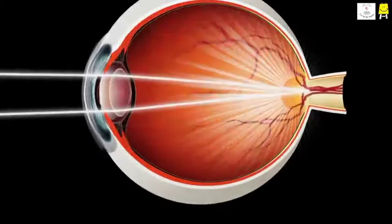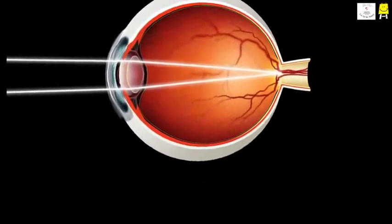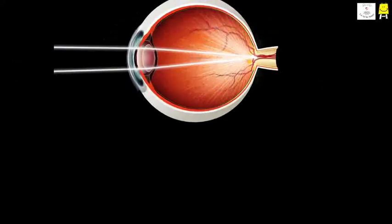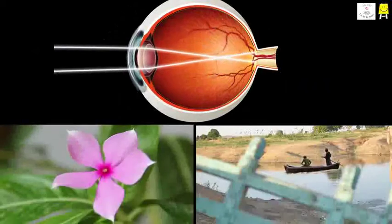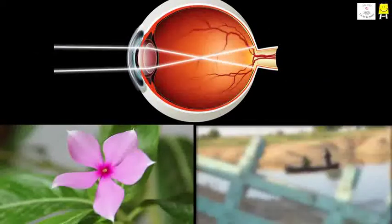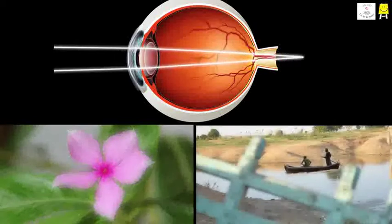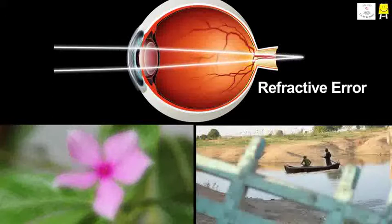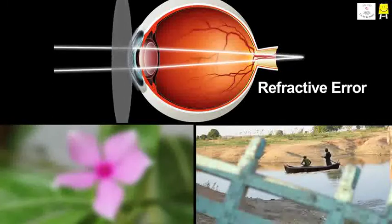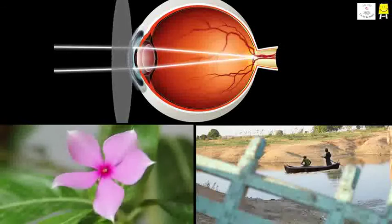In a healthy eye, the image is created on the retina. But in some cases, due to a defect, the image does not form on the retina but in front of it or behind it. This condition is called a refractive error. To correct the refractive error, a pair of spectacles or corrective lenses is used.